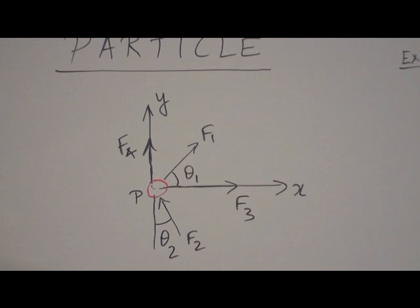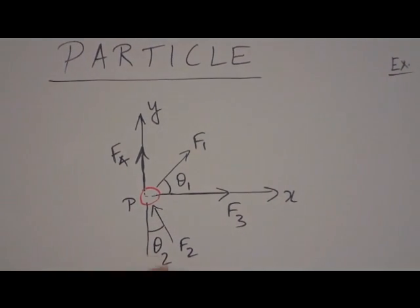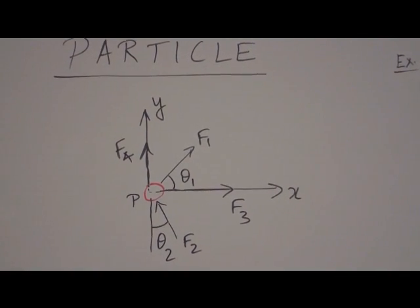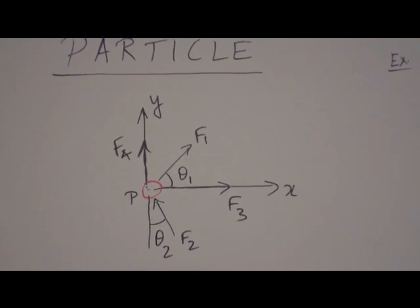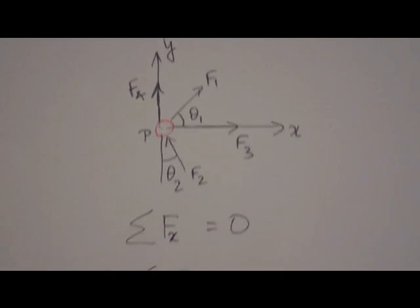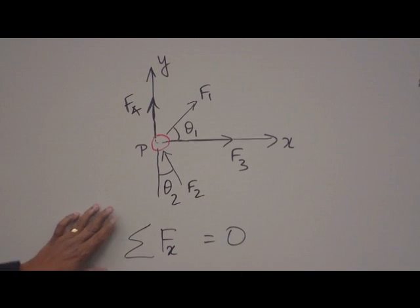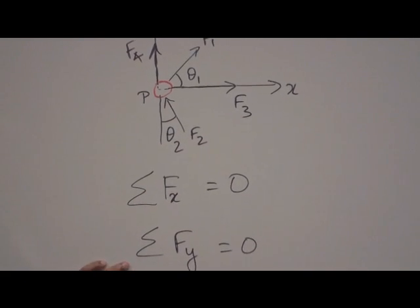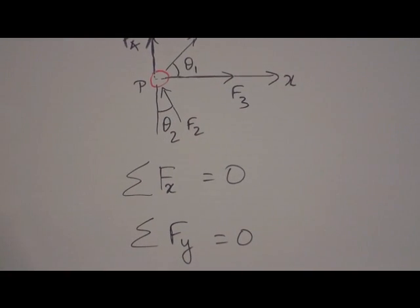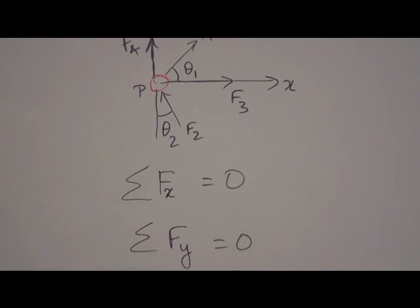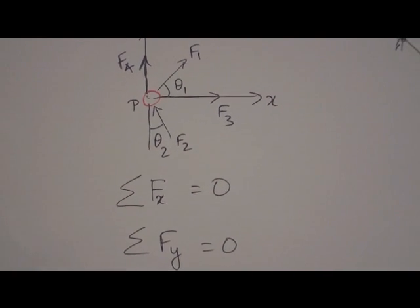Some forces along the x and y direction, some of them F2 and F1 are inclined forces. Now the equilibrium equations are sum of the force in the x direction zero, sum of the force in the y direction zero. That is all the force acting in the horizontal direction zero, all the force acting in the vertical direction zero.